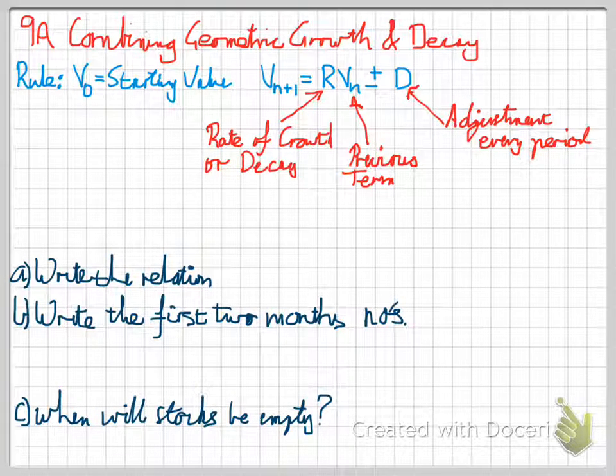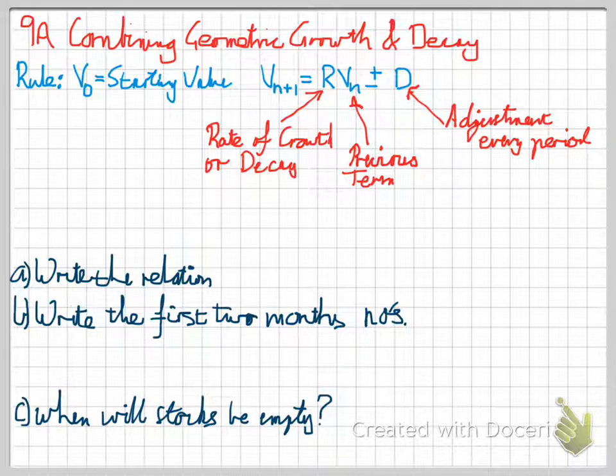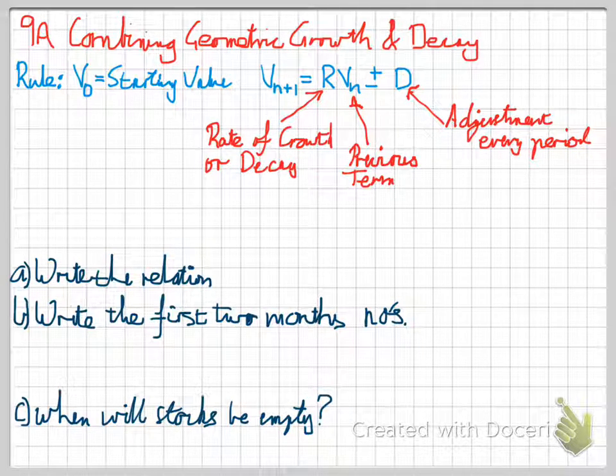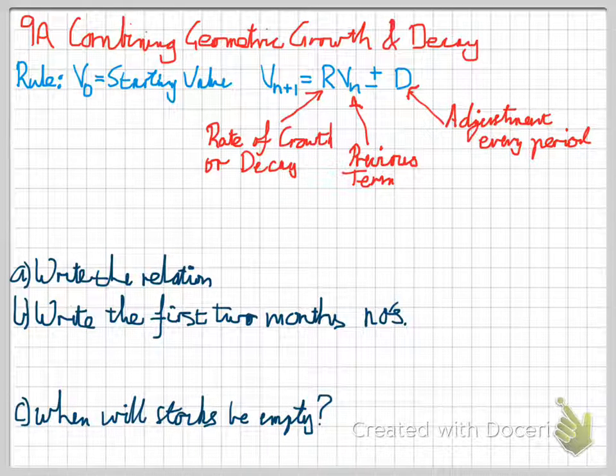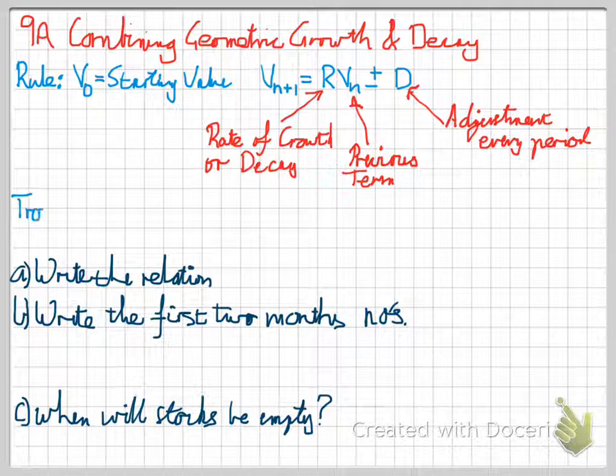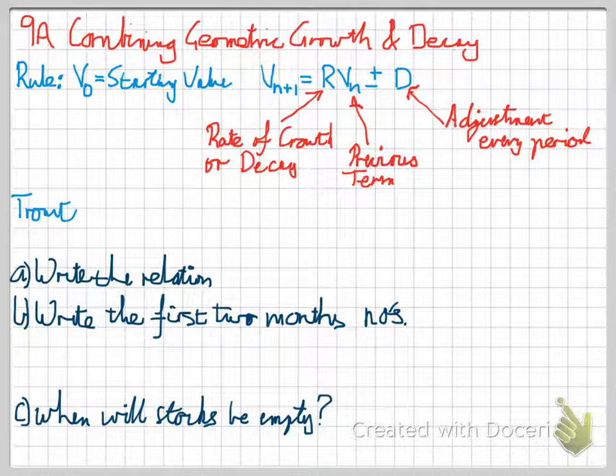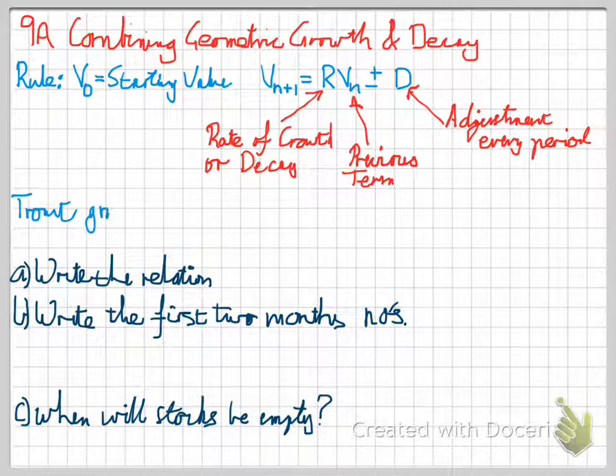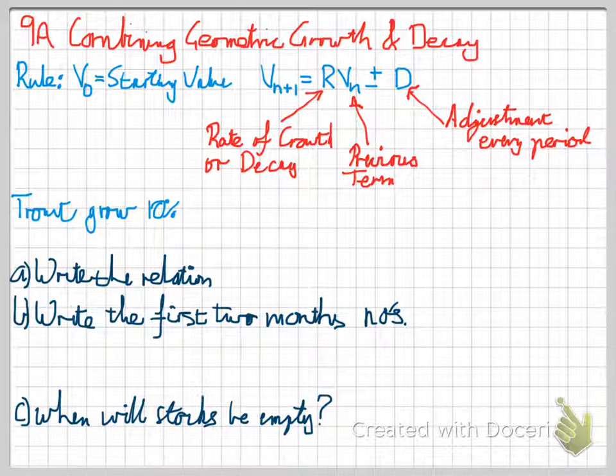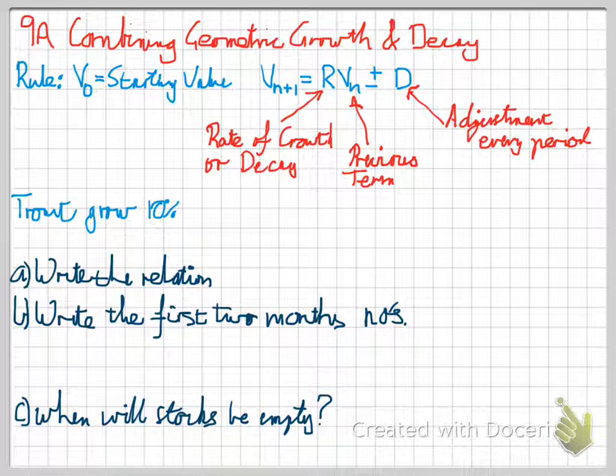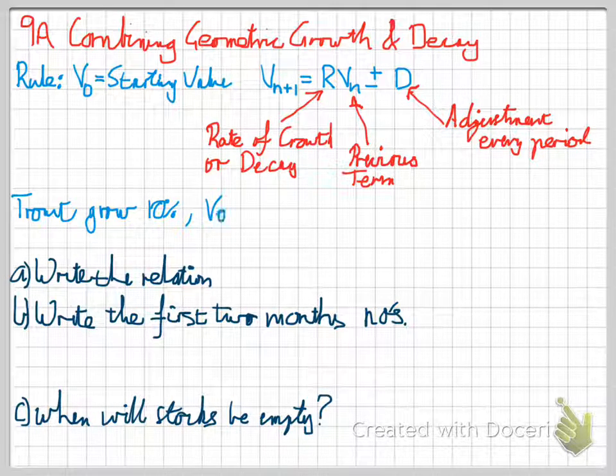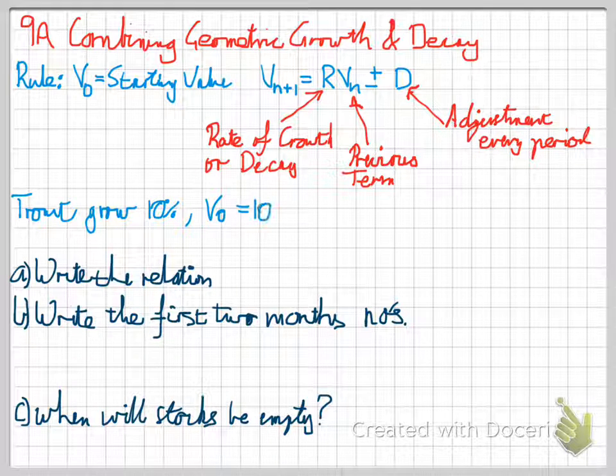So we're going to have an example where trout numbers are growing at a rate of 10% per month. And the initial population, so V0 is equal to 10,000 trout.